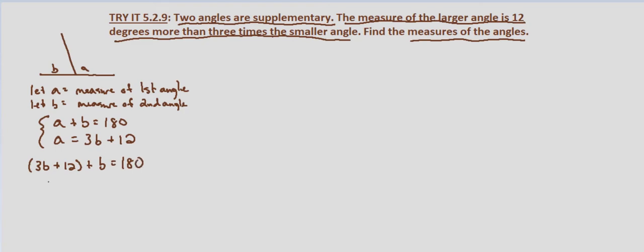Simplifying, we get 4b plus 12 equals 180. Subtract 12 from both sides. We get 4b equals 168. Divide both sides by 4 and we get b equals 42 degrees.